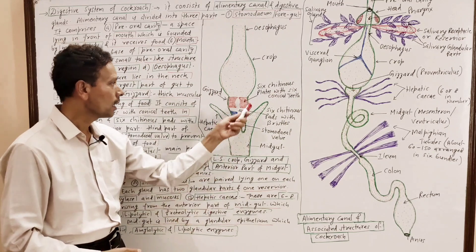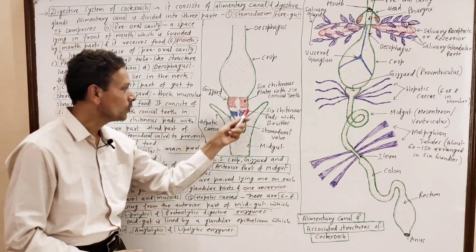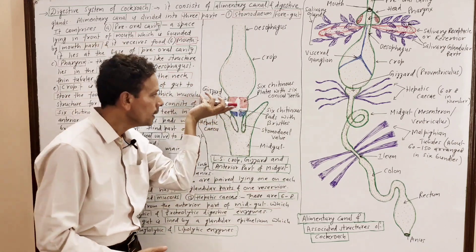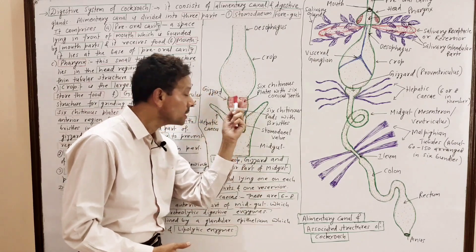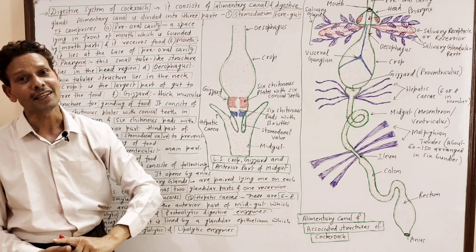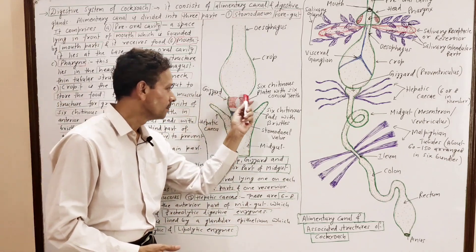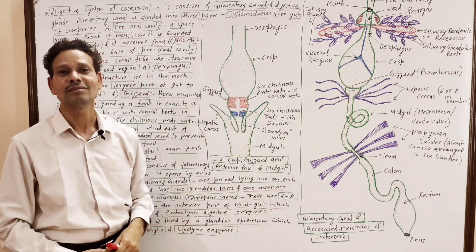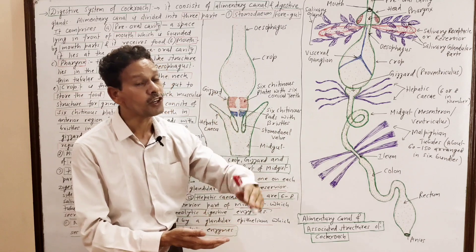Looking at the longitudinal section of the crop, gizzard, and midgut — particularly the gizzard region — it is divided into two parts. In the anterior/upper part, six chitinous plates are present, and each plate terminates with a conical tooth. So in the gizzard, six conical chitinous teeth are present, and these teeth are involved in the mastication of food. In the lower part of the gizzard, six chitinous pads with bristles are present, which are involved in the filtration of fine food particles.